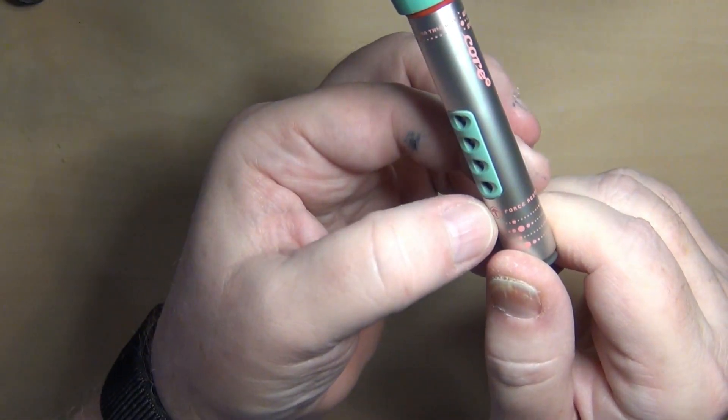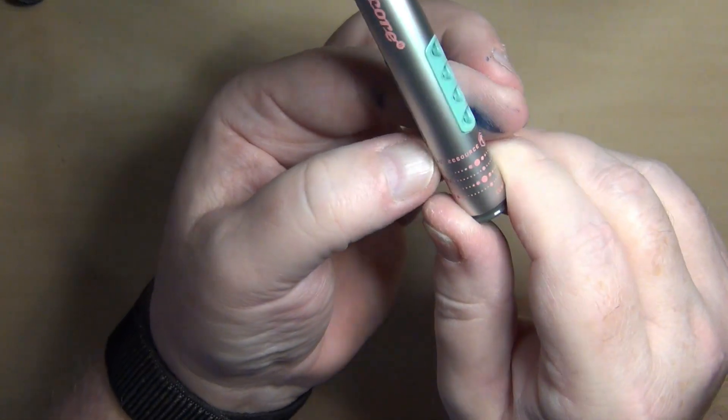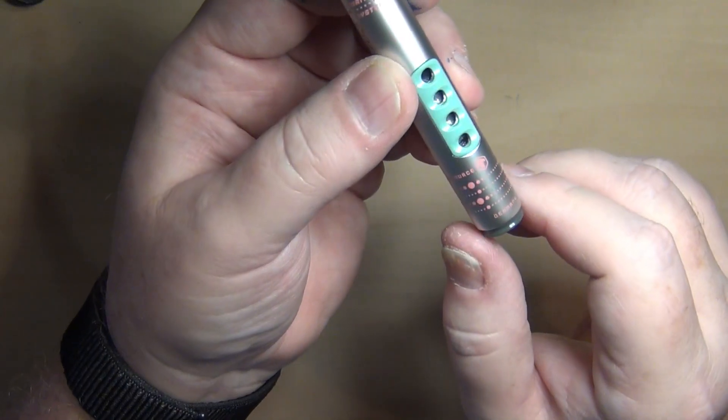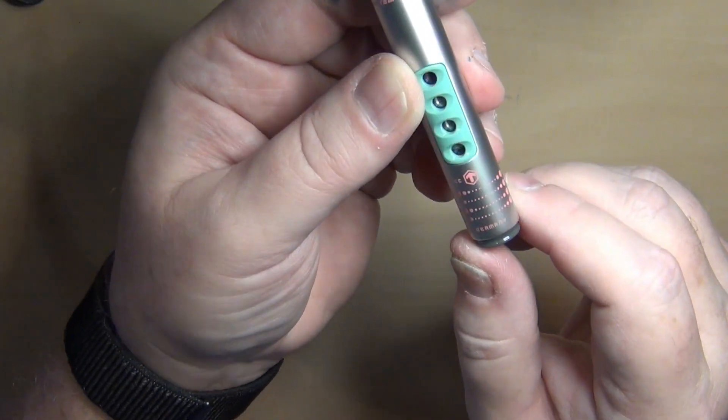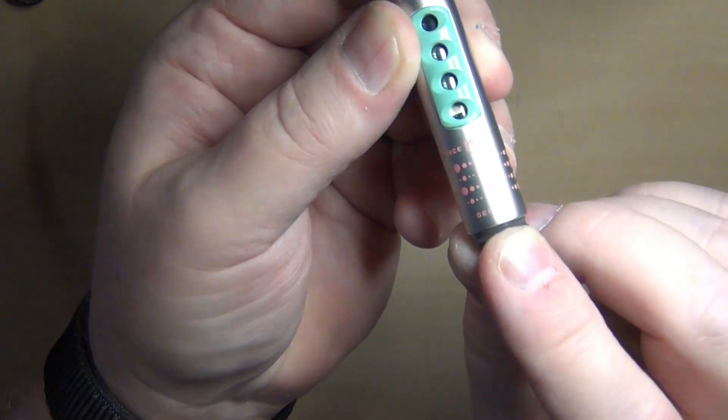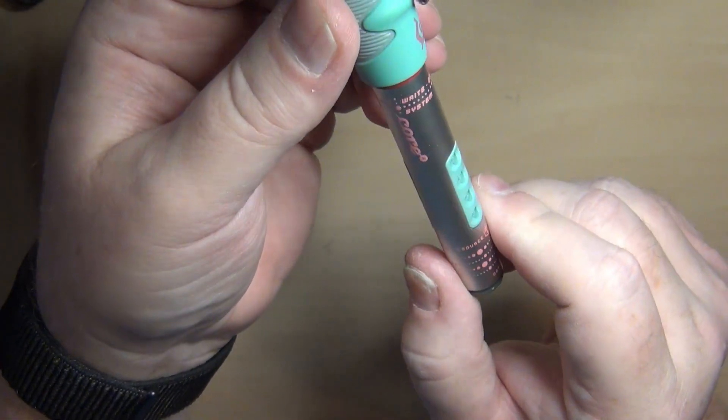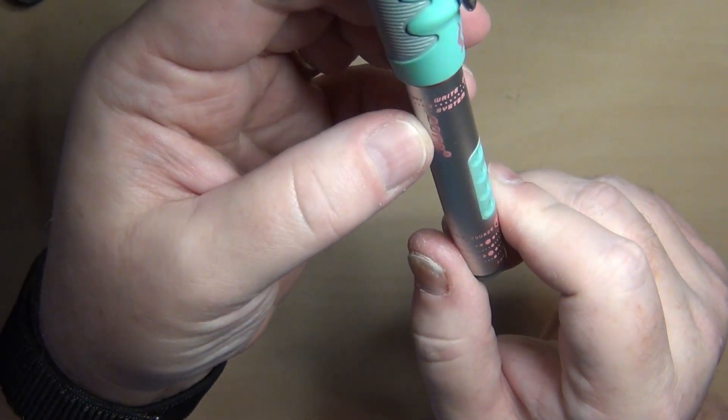So the filling instructions are right there. Force resource, which I'm assuming is what they would say is the cartridge. Germany, right there. Let's see, right on system.